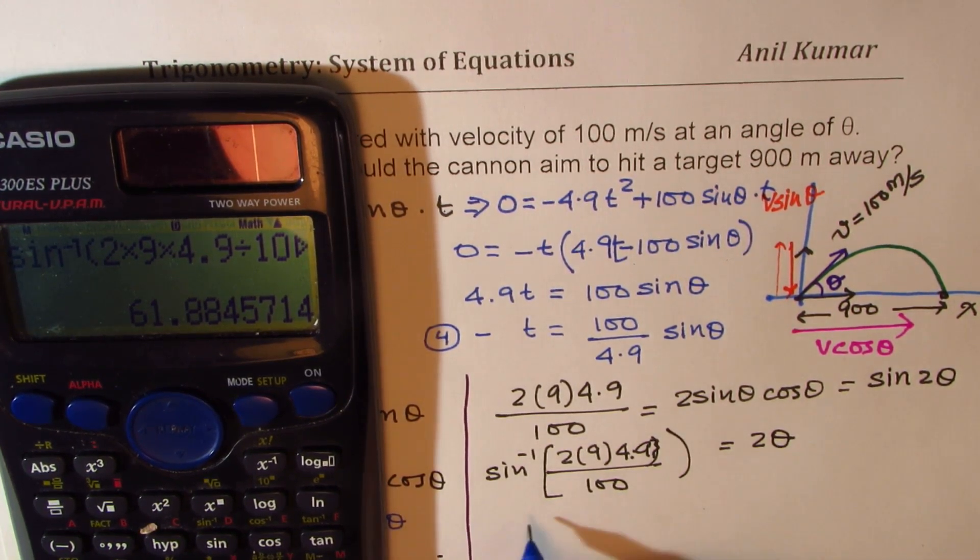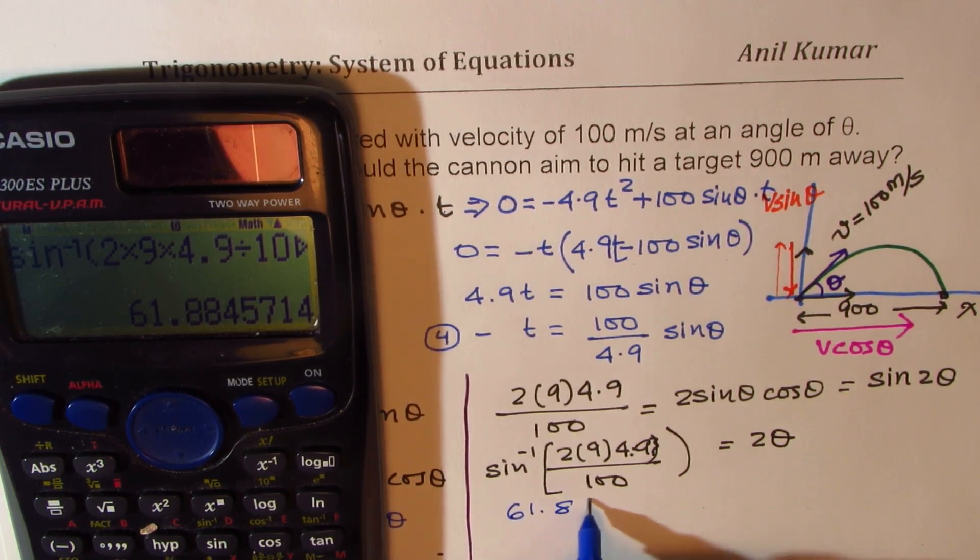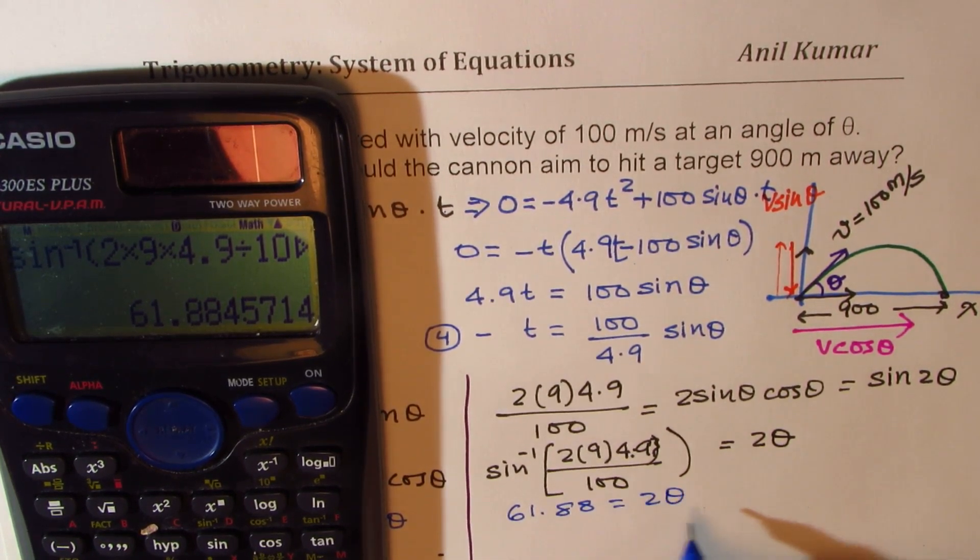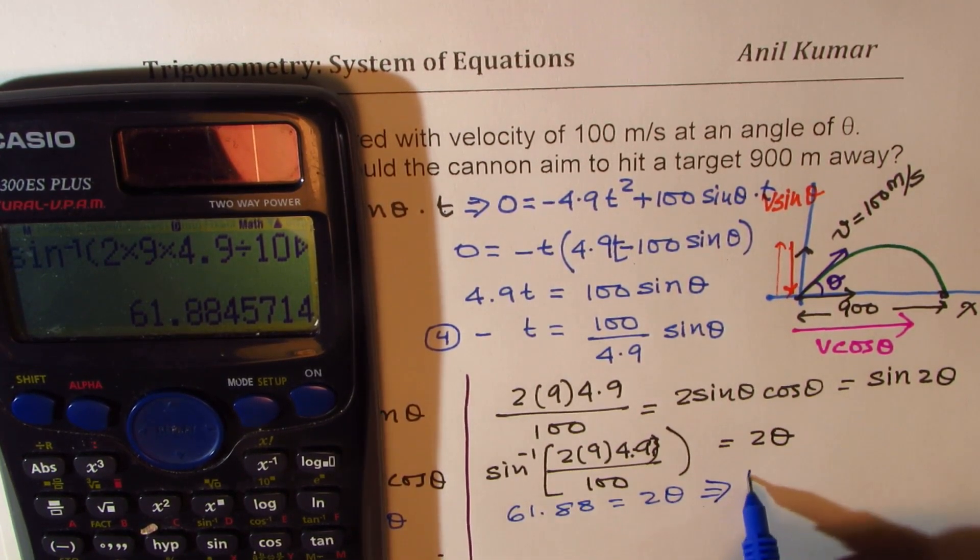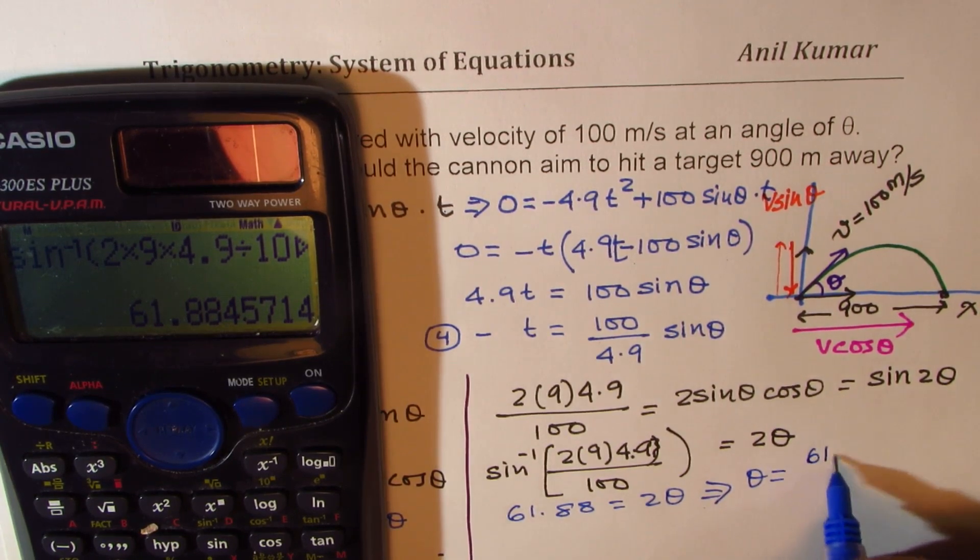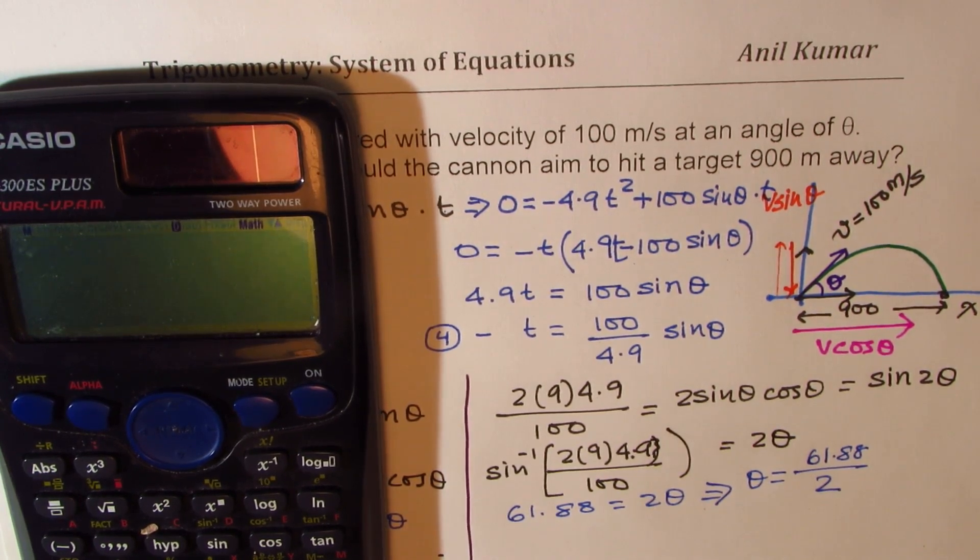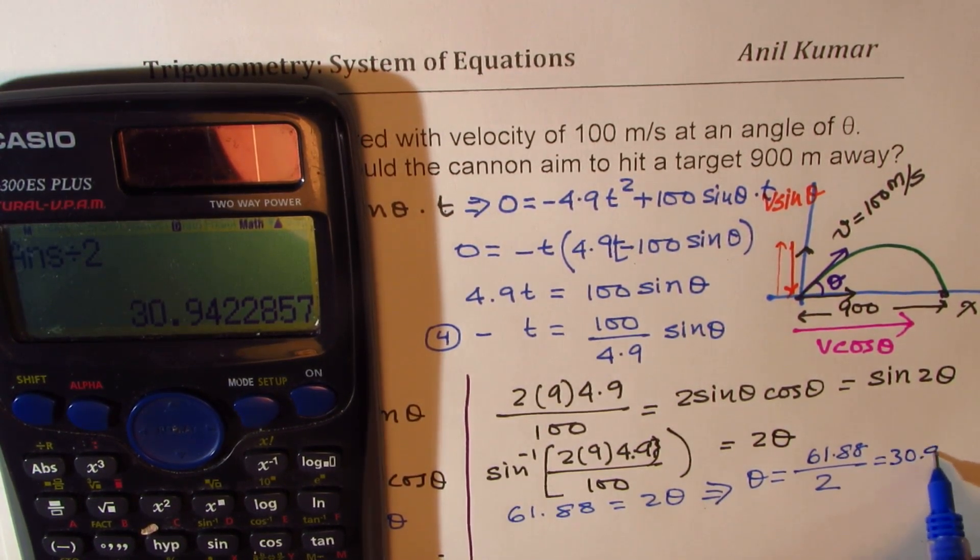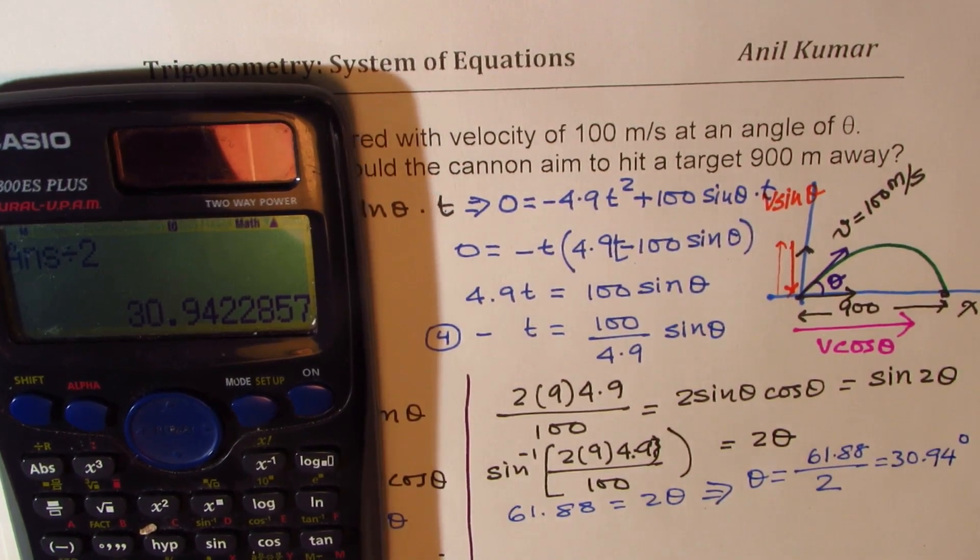So we get 61.88 equals to 2 theta and that implies that theta equals to 61.88 divided by 2. So let us divide this by 2 which gives us 30.94 degrees, correct?